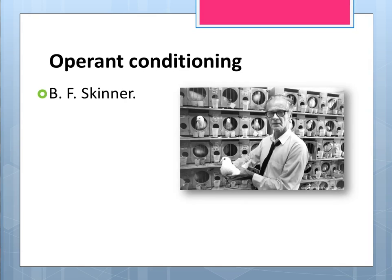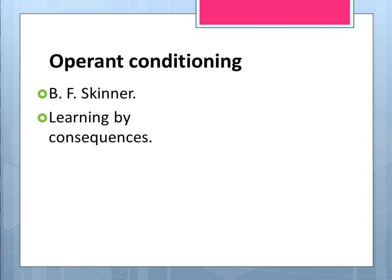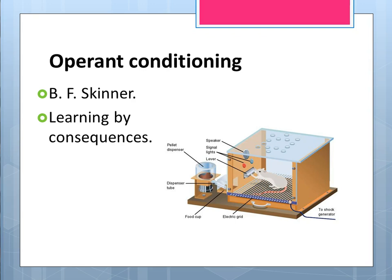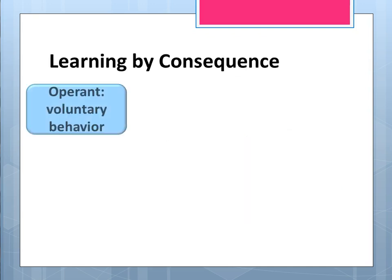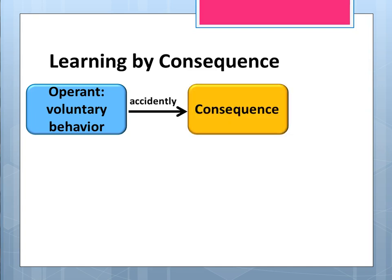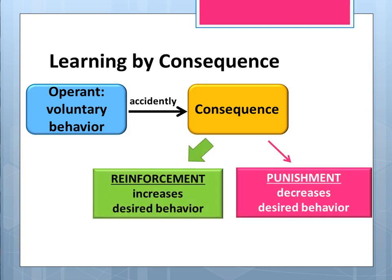As discussed in your textbook, B.F. Skinner expanded on the work of Edward Thorndike and developed operant conditioning. In its most simplest form, operant conditioning is learning by consequences. Skinner used his operant chamber, also known as a Skinner box, to experiment with rats and pigeons. It's learning by consequence, and Skinner described one's voluntary behavior as an operant. When we engage in this voluntary behavior, it accidentally leads to some sort of consequence. This consequence can either reinforce behavior or punish behavior.